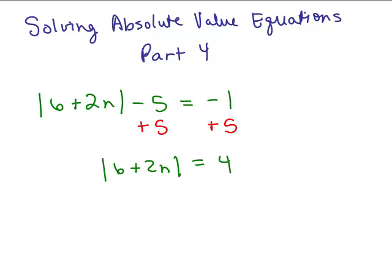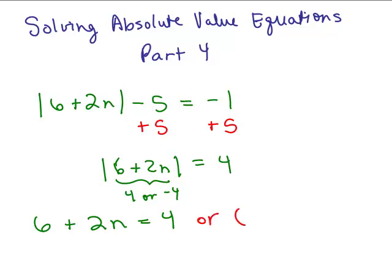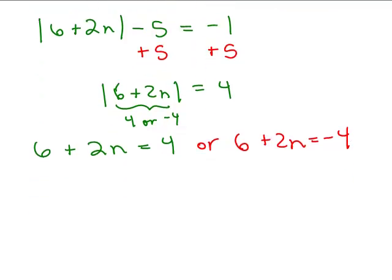This breaks up into two pieces because the part inside the absolute value can either be 4 or negative 4 — because the absolute value of 4 is 4, and the absolute value of negative 4 is also 4. So 6 plus 2n can equal 4, or 6 plus 2n can equal negative 4. There are two distinct equations that you need to solve.